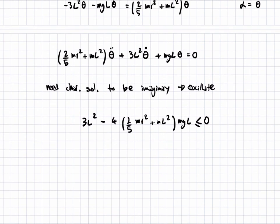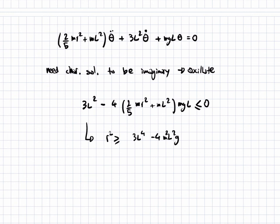So isolating for r, we get that r squared has to be bigger or equal to three L to the four minus four m l squared, m squared, sorry, l squared g. Um, sorry, this is l cubed, divided by, sorry, eight fifths times m squared, g big L.